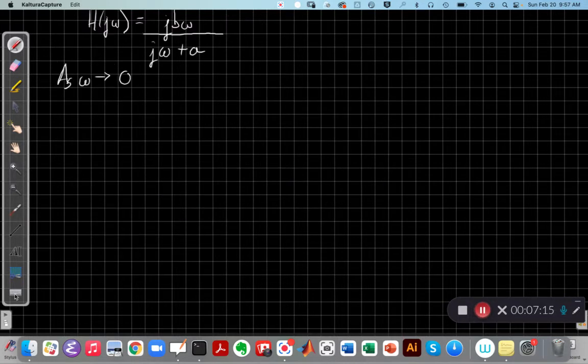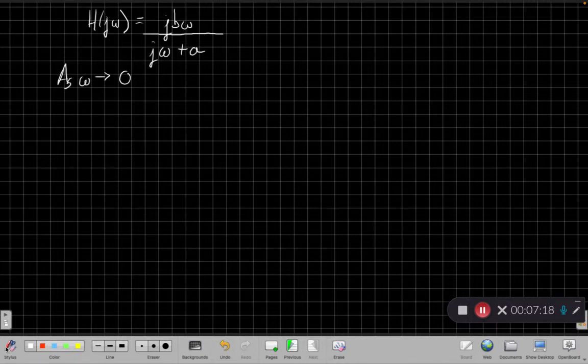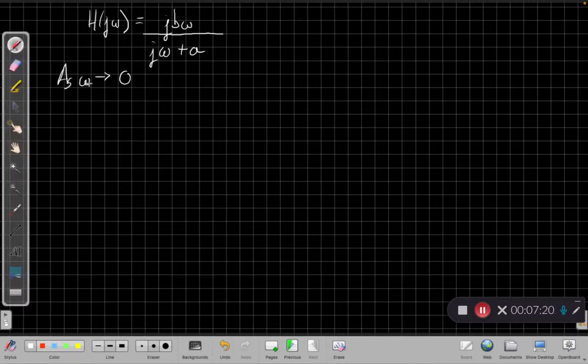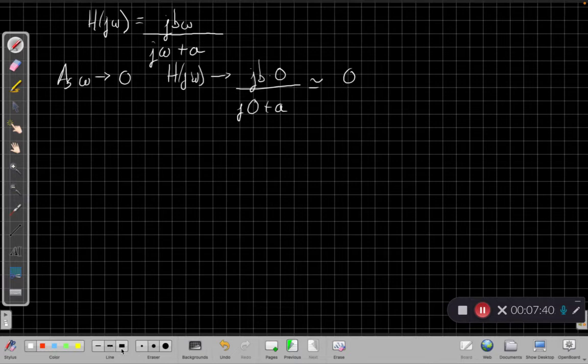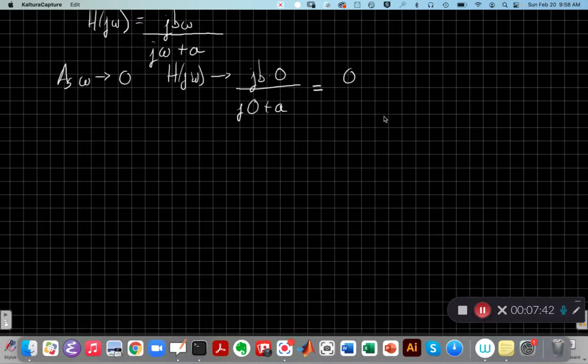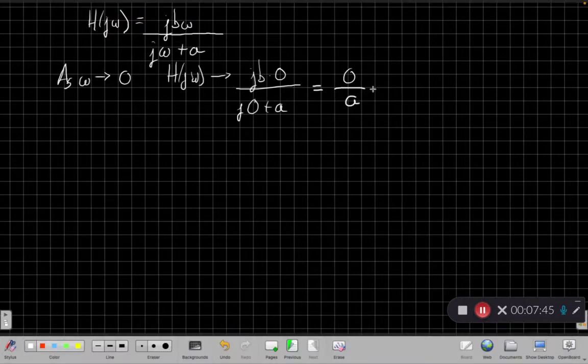Here we are back with our frequency response on a clean page. As omega goes to zero, what's going on? H(jω) in the limit as ω→0 becomes jb×0 over j×0 + a. The limit is equal to zero over a, or j×0 over a if you want to be picky about it. But in the limit as omega gets smaller and smaller, the zero in the numerator dominates. So low frequencies have a gain of zero. It's removing low frequencies.